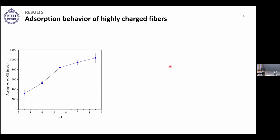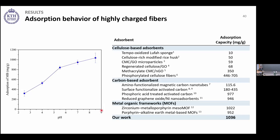As a proof of concept, adsorption capacity of these fibers for methylene blue was tested at pH 2.5 to 8.5. At pH 2.5, most acrylic acid groups are not ionized, giving the lowest adsorption capacity of around 300 mg/g. At pH 8.5, where more than 85% of acrylic acid groups are ionized, adsorption capacity reached higher than 1000 mg/g — significantly higher than cellulose-based materials and comparable with carbon-based materials. While some metal-organic frameworks achieve similar capacities, they require toxic solvents and high temperatures to prepare.